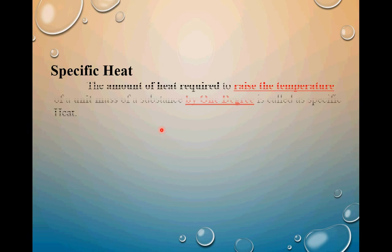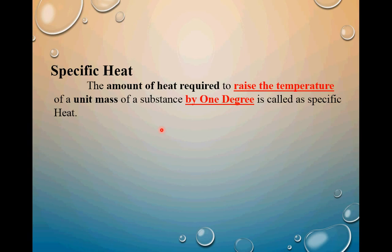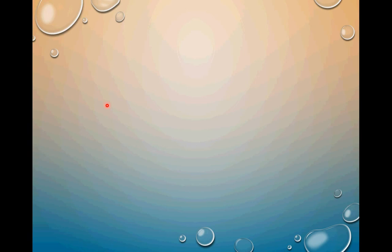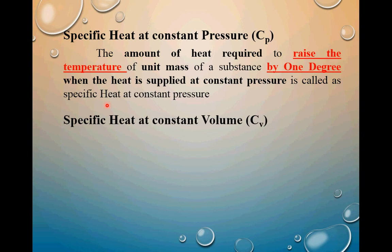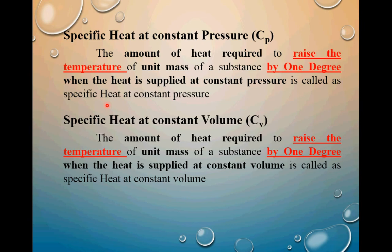Now, specific heat. The amount of heat required to raise the temperature of a unit mass of a substance by one degree is called specific heat. There are two specific heat capacities. The first is specific heat at constant pressure, denoted by Cp. The second is specific heat at constant volume, denoted by Cv — the amount of heat required to raise the temperature of a unit mass of a substance by one degree when heat is supplied at constant volume.